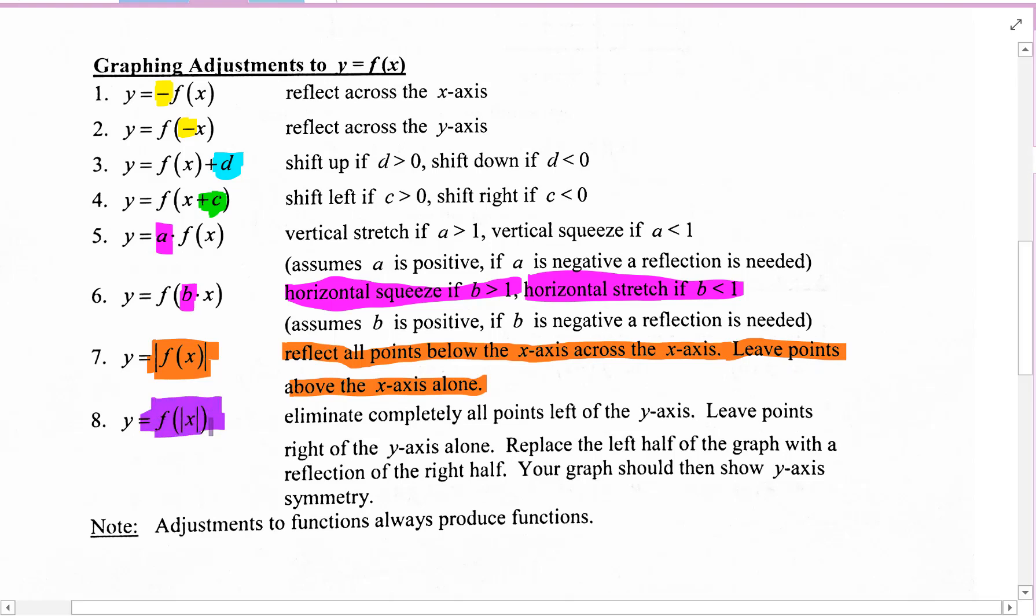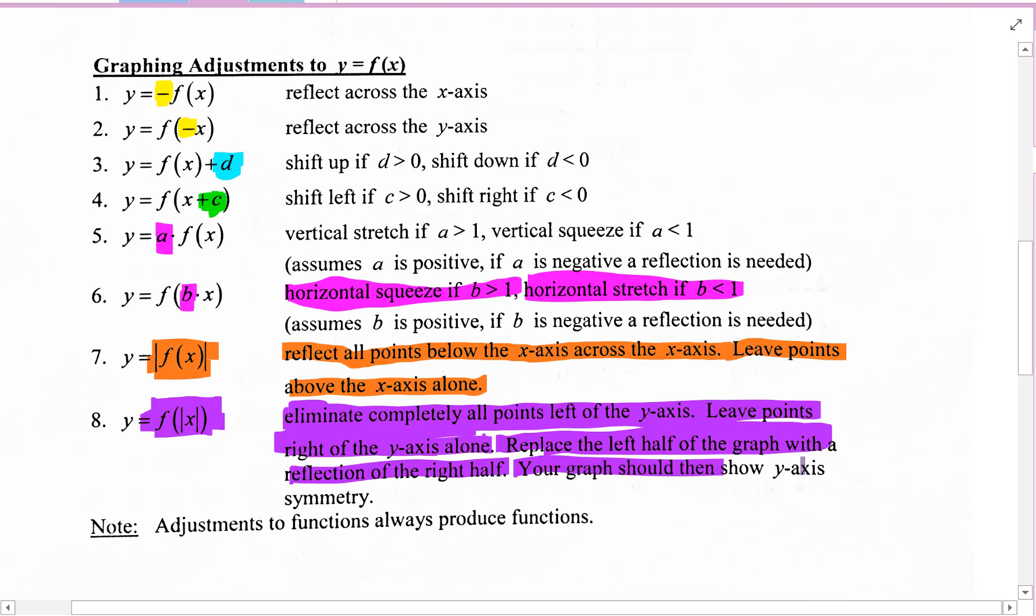For f of absolute value x, eliminate completely all points left of the y-axis. Leave the points right of the y-axis alone. Then you're going to reflect all those points. So replace the left half of the graph with a reflection of the right half. Your graph should then show y-axis symmetry. So we're going to practice these graphing adjustments or transformations.